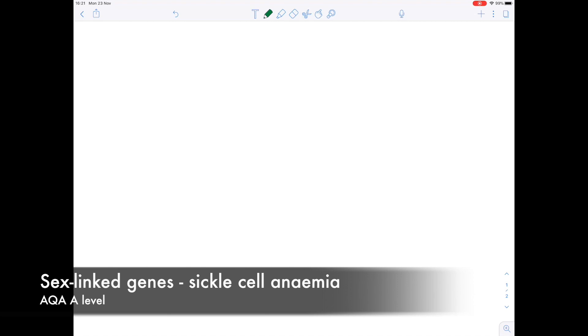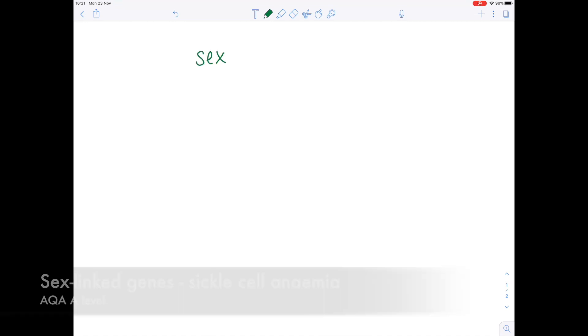This is an A-level biology video about sex-linked genes. Specifically, we're going to be looking at how sickle cell anemia is inherited. So we're going to start by looking at the symptoms and then how it's inherited.